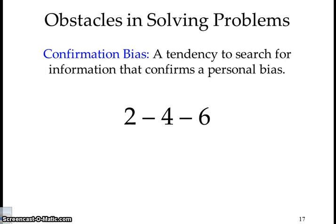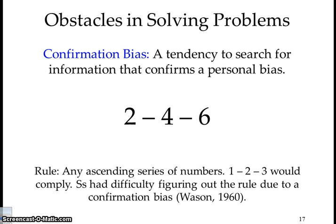We do have obstacles in problem-solving, like confirmation bias — a tendency to search for information that confirms your personal bias. For example, if I believe vitamins can cure the common cold, I'll find research studies that suggest that and confirm my bias. An ascending series like two, four, six illustrates this — subjects had difficulty figuring out the rule due to confirmation bias.